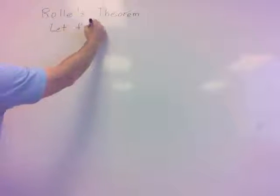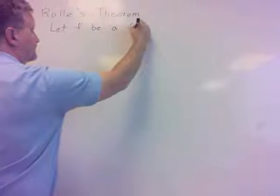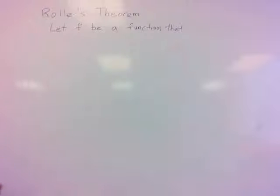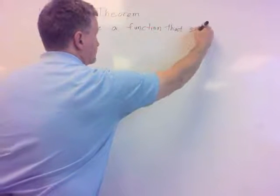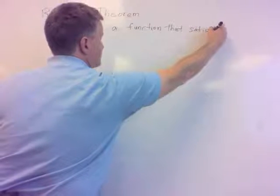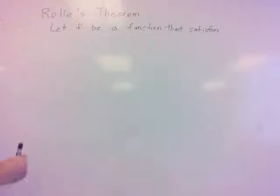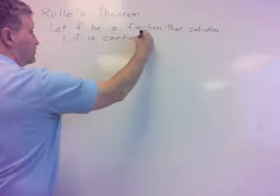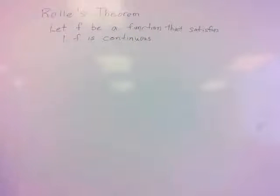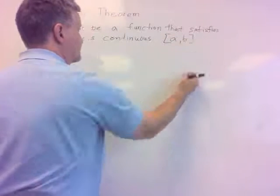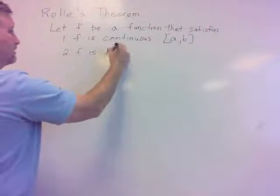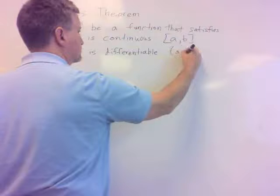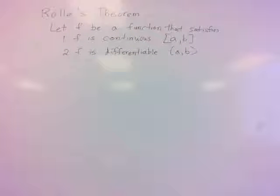Let F be a function that satisfies these three qualities. Number one, F is continuous on the interval A to B, closed interval which means includes the endpoints. Number two, F is differentiable on AB, but the open interval AB because it does not include the endpoints.